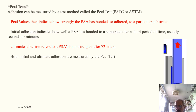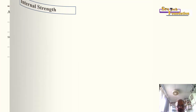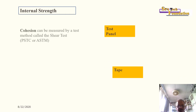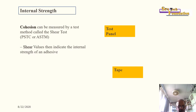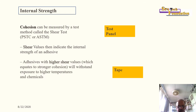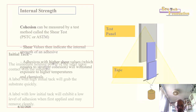The peel test is performed at 180 degrees, though it can also be tested at 90 degrees or other angles such as 30 degrees. Internal strength, which is cohesion, can be measured by the shear test, as given in PSTC, ASTM, or BIS standards. Shear values indicate the internal strength of an adhesive. Adhesives with higher shear values — equating to strong cohesion — will withstand exposure to higher temperatures and chemicals.